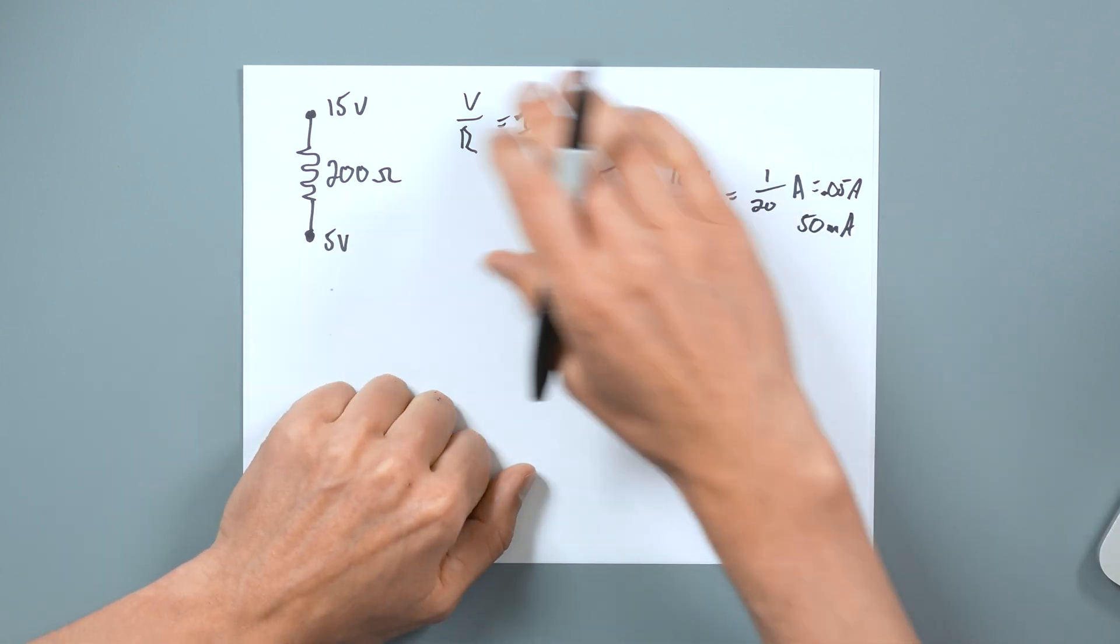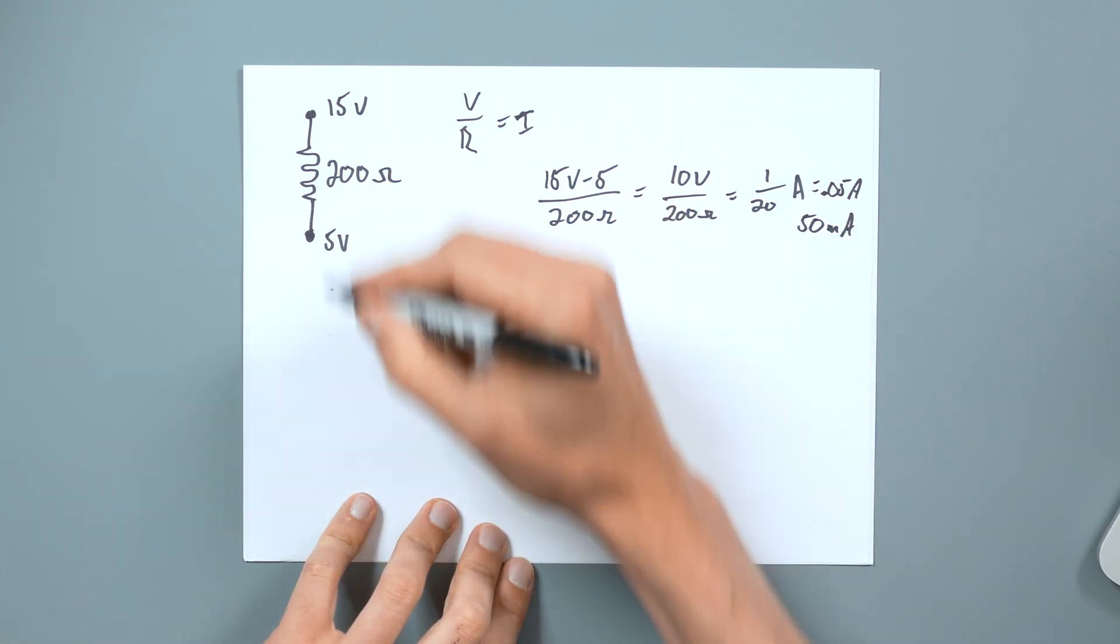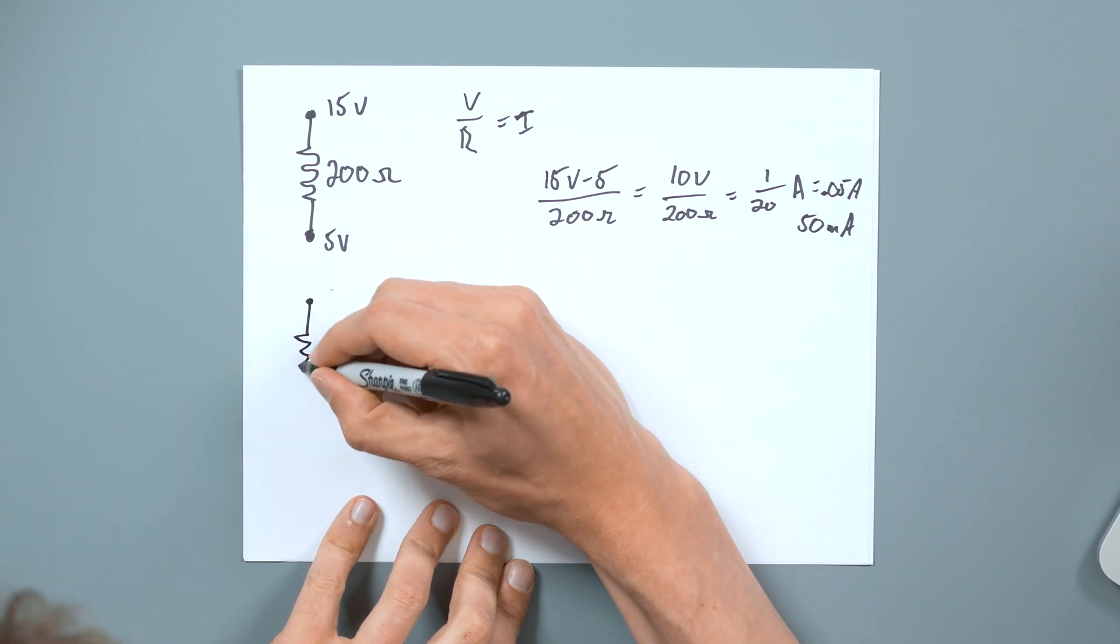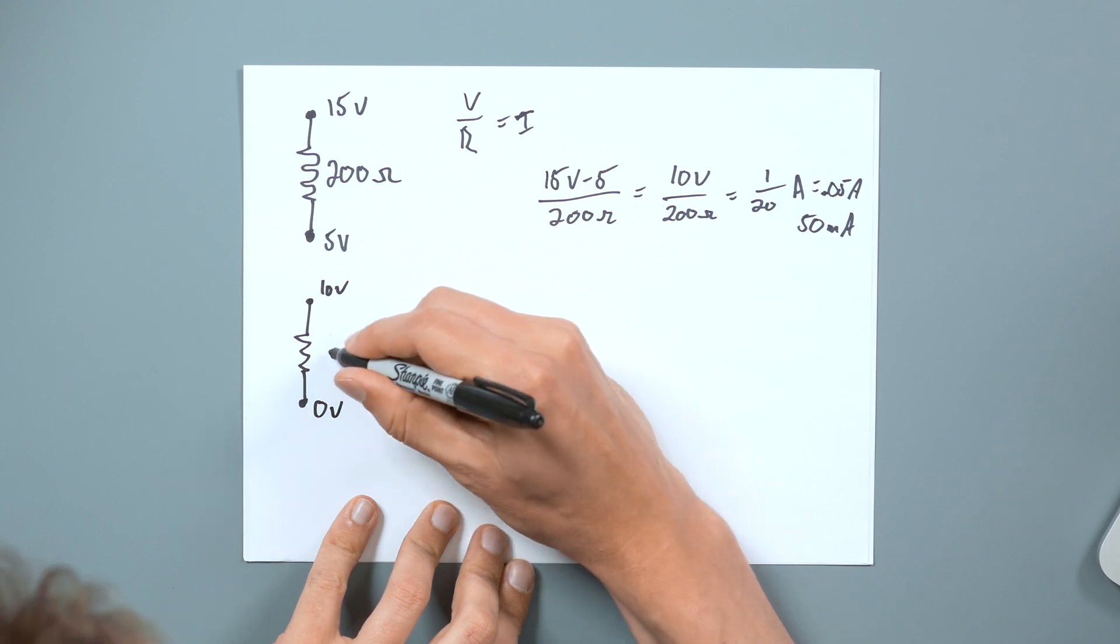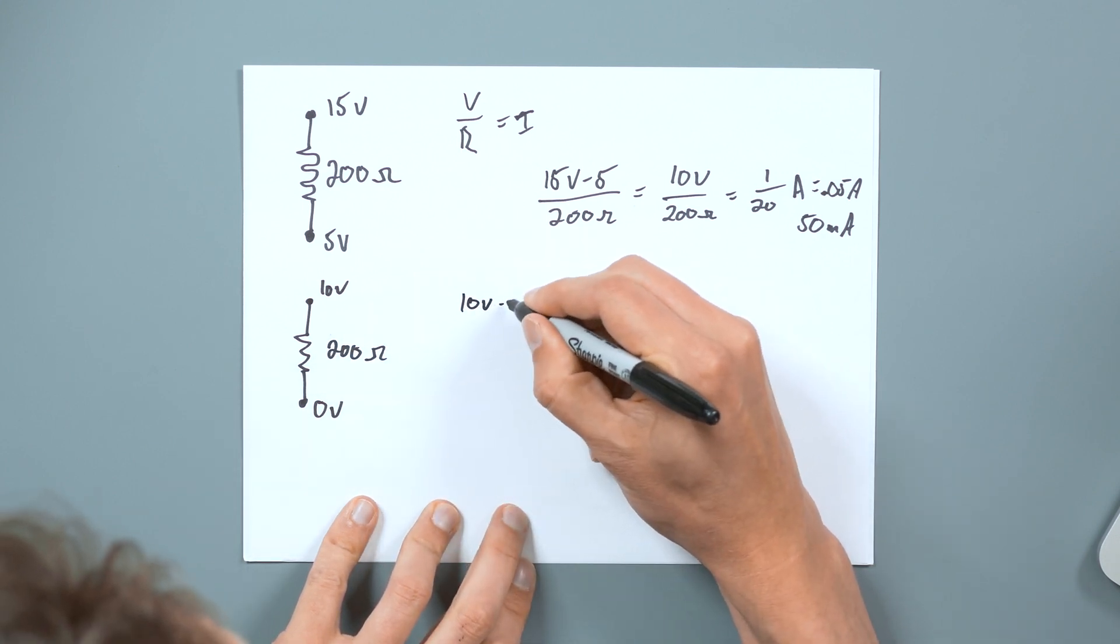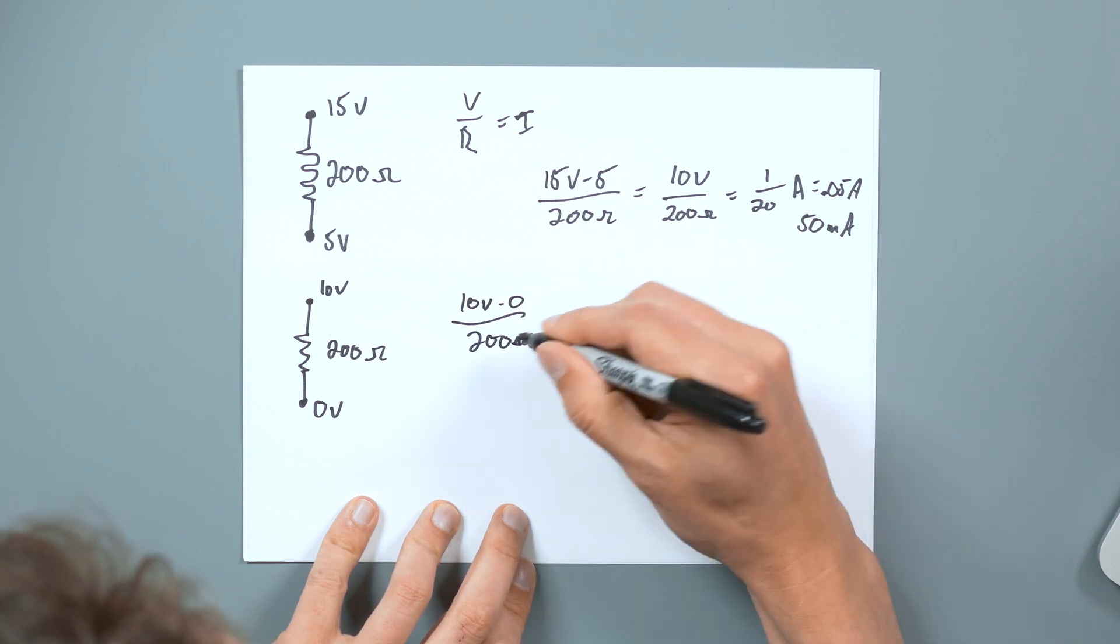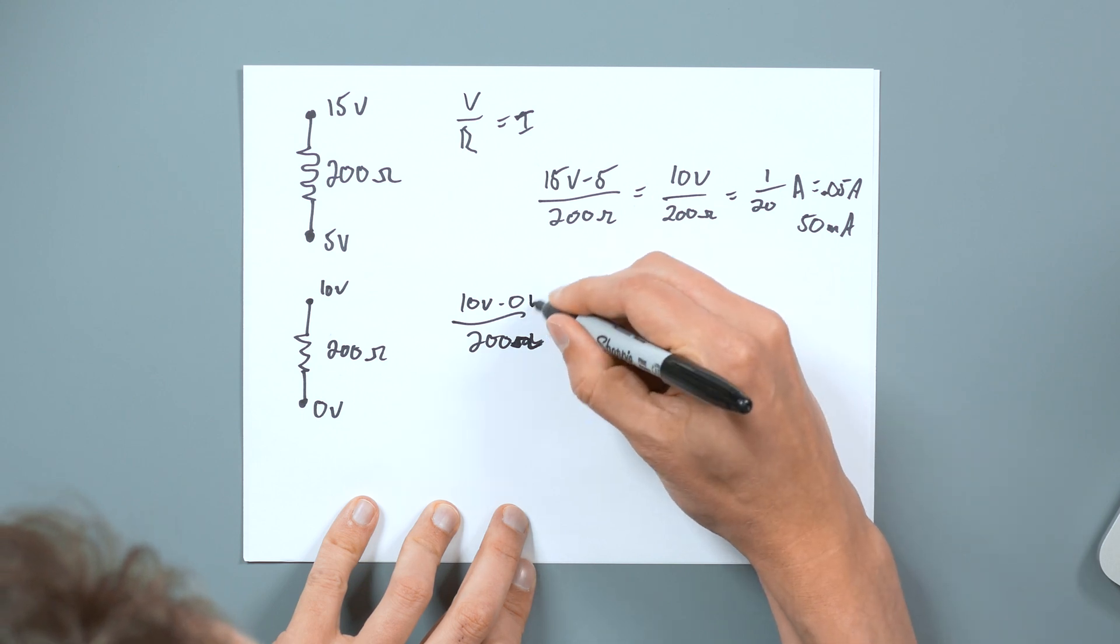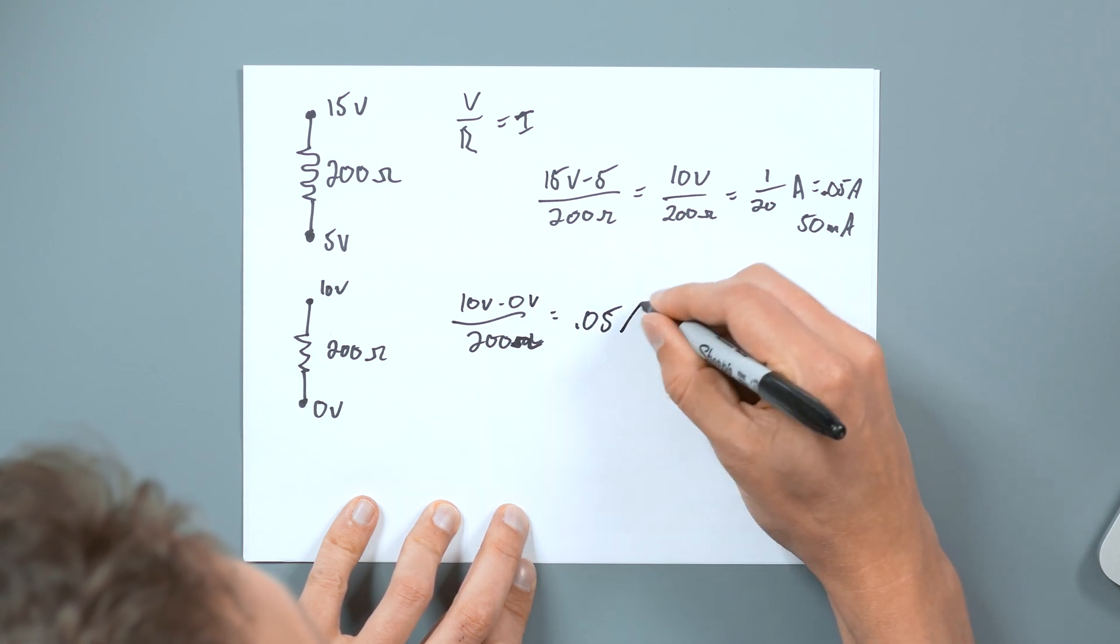So the key thing that I want to take away from this is it doesn't matter that this was 15 volts or five volts, because we could do this exact same circuit at 10 volts, zero volts, 200 ohms. And then we'd still have 10 volts minus zero over 200. And that's still going to equal 0.05 amps.